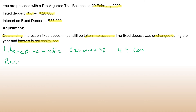But how much was actually received? The amount received is 37,200 — the figure given in the trial balance. So the outstanding interest is 49,600 minus 37,200, which equals 12,400. That is the outstanding interest.